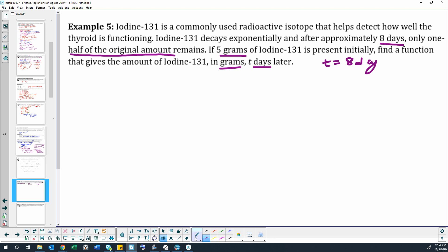In that eight days, half of the original amount remains. With radioactive isotopes and decay this is called half-life. It kind of explains it in a different way than that half of the original amount remains. We officially call that half-life: half of the radioactive isotope remains because half of it has decayed in eight days. If five grams is present initially, let's write down our initial amount is five grams.